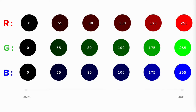Like grayscale values, each red, green, and blue value is expressed as a range from 0 to 255. 0 means there's no presence of the color, and 255 being the maximum amount of the color. As the number increases, the shade of the color gets brighter.